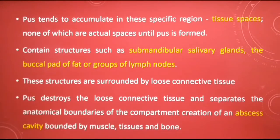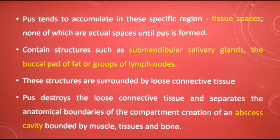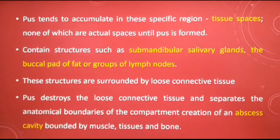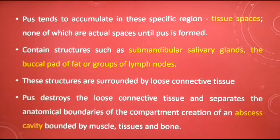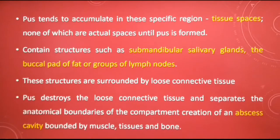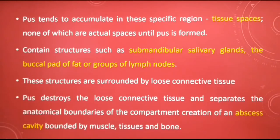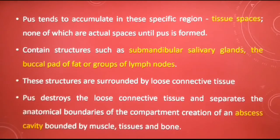Normally these structures are surrounded by loose connective tissue, which is thin and fragile and easy to strip off using a finger. The pus formed within these spaces destroys the loose connective tissue around it and separates the anatomical boundaries of the compartment as it increases in volume. Thus an abscess cavity is created which is bounded by muscles and tissues. Orofacial infections do not spread haphazardly but tend to accumulate in these potential spaces around the jaws.